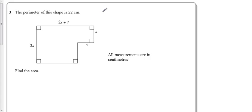Okay, now question number three here is a little bit tricky. We're given some information about the perimeter of the shape. We know the total around the outside of the shape is 22 cm, and we're asked to find the area.